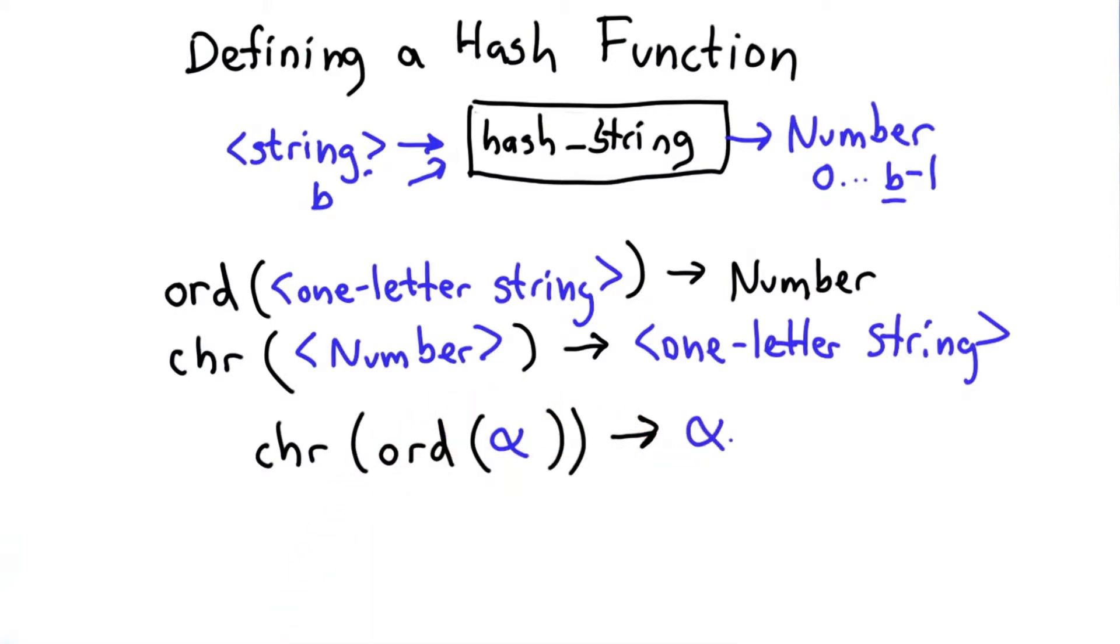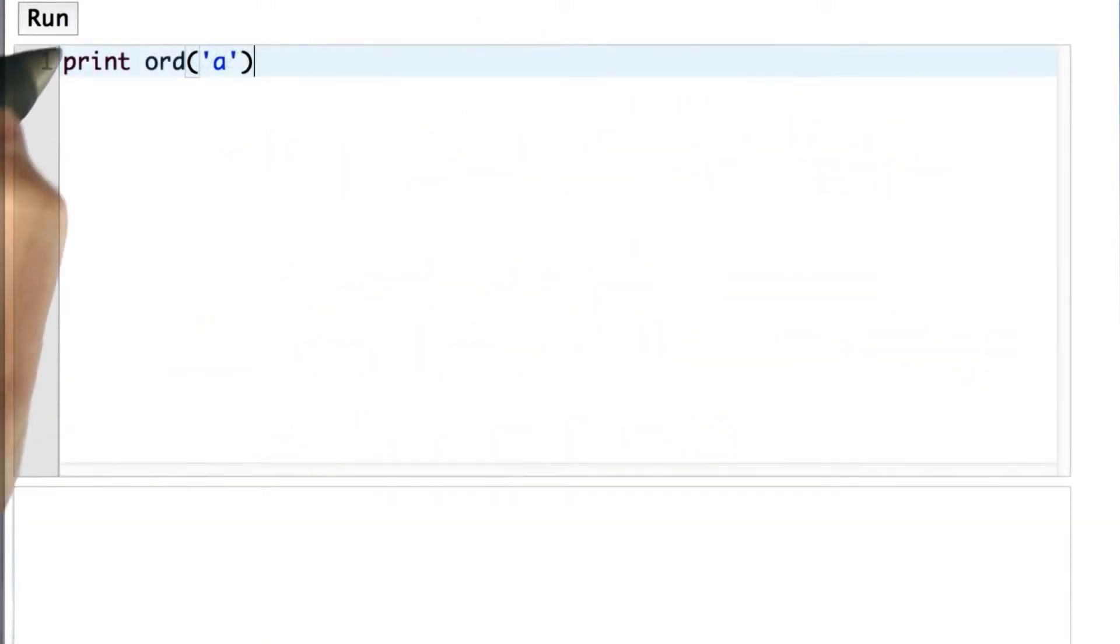So let's try a few examples in the Python interpreter to see how ord and chr work. So we'll print ord of 'a', and when we run that we see we get the number 97. If we try print ord of capital 'A', that's different.